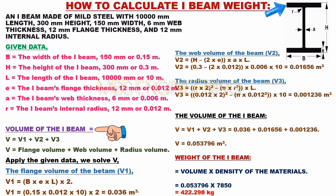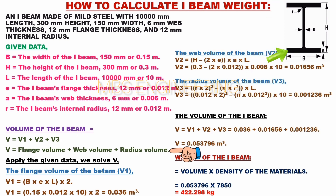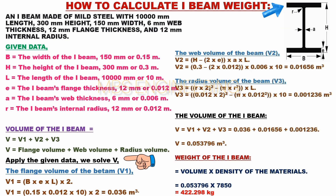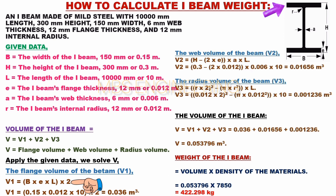We calculate the volume of the I-beam: V = V1 + V2 + V3. First, we calculate the flange volume V1. V1 = B × A × L × 2 = 0.15 × 0.012 × 10 × 2 = 0.036 cubic meters. The flange volume of the beam V1 is equal to 0.036 cubic meters.